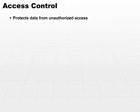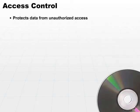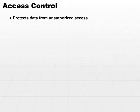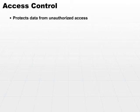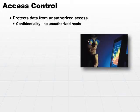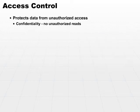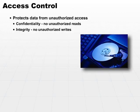First off, let's talk about some of the basics. Keep in mind, access control protects data from unauthorized access. Unauthorized access could be viewing the data, writing the data, or modifying it. Access control supports two of our three tenets of the CIA triad: confidentiality, to ensure there are no unauthorized reads, and integrity, no unauthorized writes.